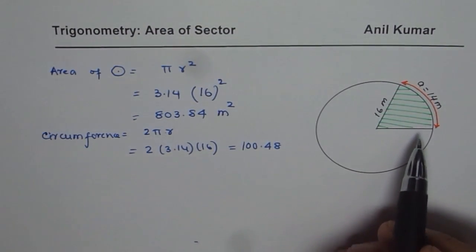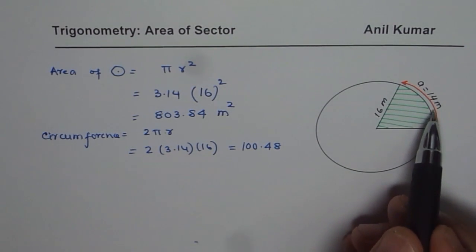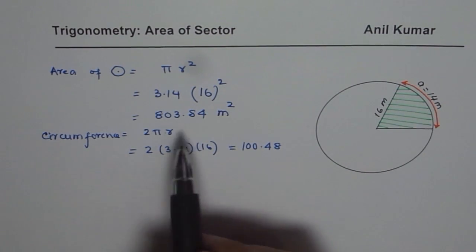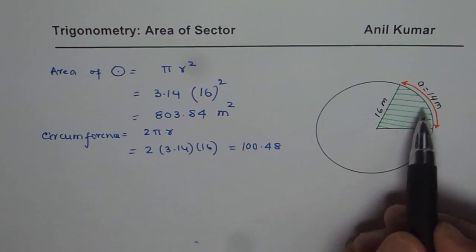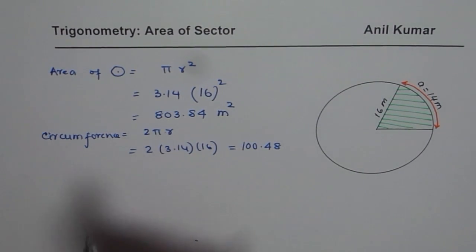Now as you can compare this arc length is 14. So it is a ratio. The area of this sector will be ratio of 14 over 100.48 for the whole area.